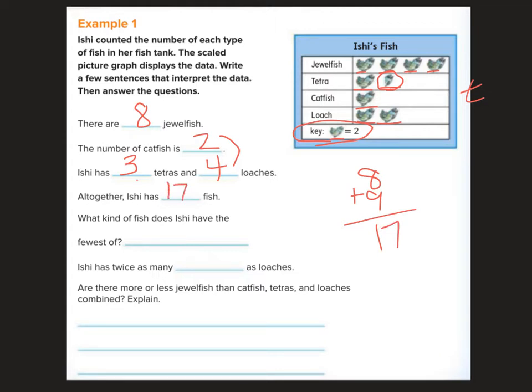What kind of fish does Ishi have the fewest of? Catfish. So these are all interpreting the data. That's what we're doing here. We're saying, how many of those are there? How many total fish are there? What kind does she have the fewest? That's catfish. So here are all of our interpreting the data sentences.